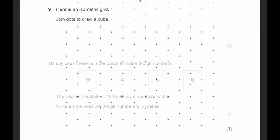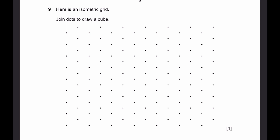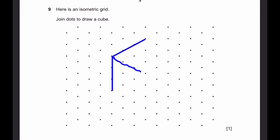Now for question 9. Here's an isometric grid — use the dots to draw a cube. Let's start by drawing one vertical line to a chosen number of dots. So let's say we draw a line with a length of 3 units. Now we want to draw the width over here. The length of the cube — we extend it from one of the corners first. So we have 3 lines drawn like this.